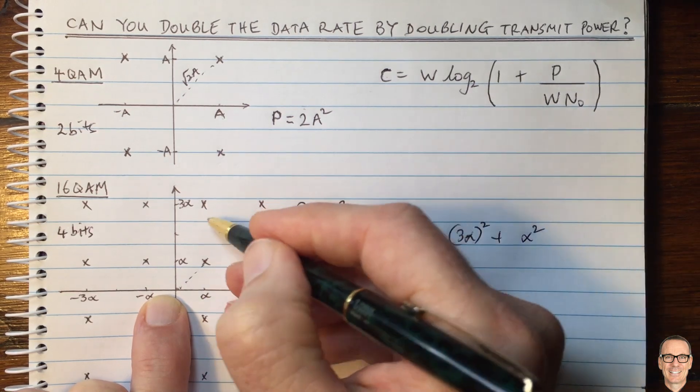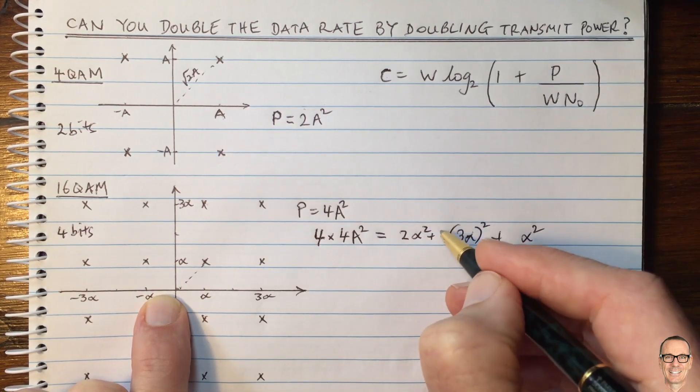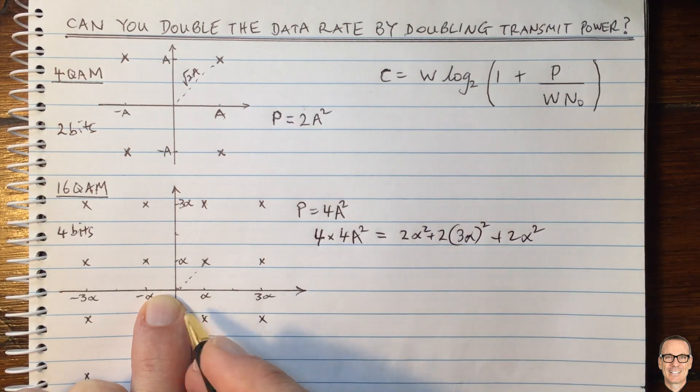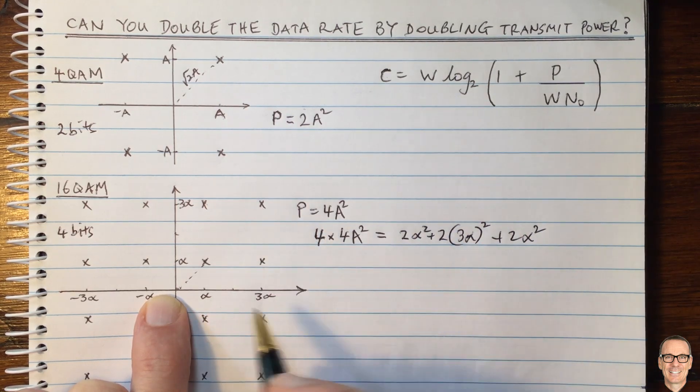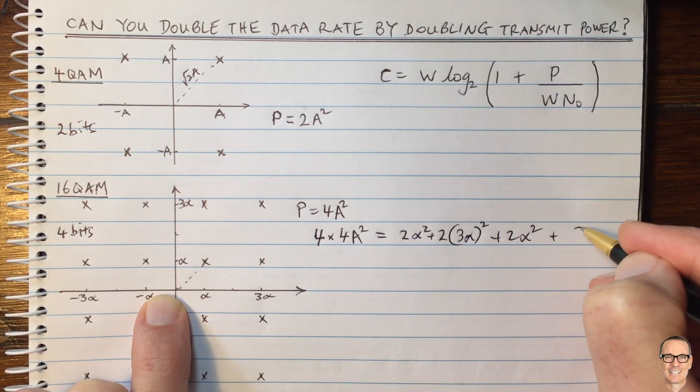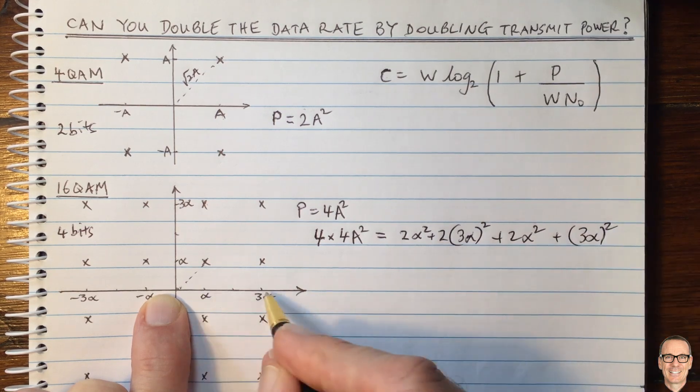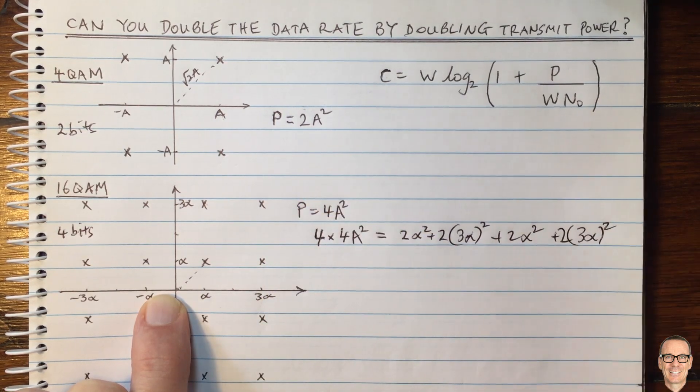And that's the same as the power for this one. So we have two lots of this and two lots of this. And the power for this one here is three alpha squared and plus three alpha squared, so two.